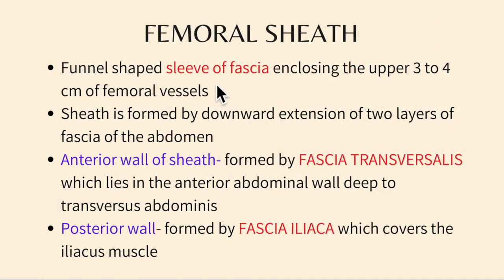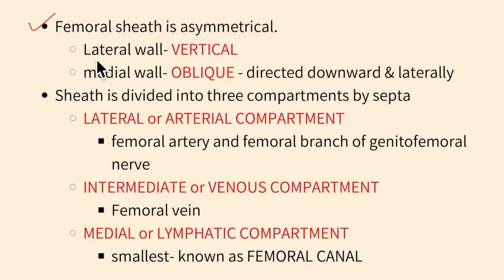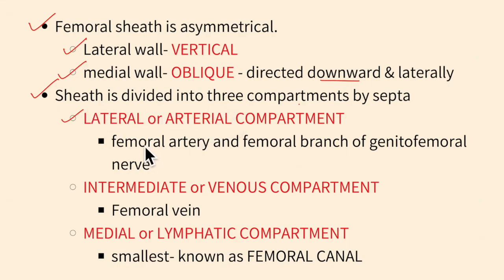To summarize the femoral sheath: it is a funnel-shaped sleeve of fascia enclosing the upper three to four centimeters of femoral vessels. The anterior wall is formed by fascia transversalis and the posterior wall by fascia iliaca. The lateral wall is vertical and the medial wall is oblique. The three compartments are: the lateral/arterial compartment containing the femoral artery and femoral branch of the genitofemoral nerve; the intermediate/venous compartment with the femoral vein; and the medial/lymphatic compartment — the smallest — known as the femoral canal.